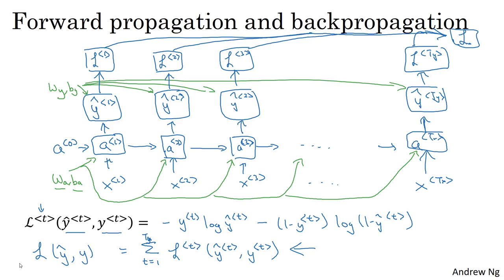And from the earlier examples you've seen of backpropagation, it shouldn't surprise you that backprop then just requires doing computations or passing messages in the opposite directions to all of the forward propagation steps. And that then allows you to compute all the appropriate quantities that lets you then take derivatives with respect to the parameters and update the parameters using gradient descent.